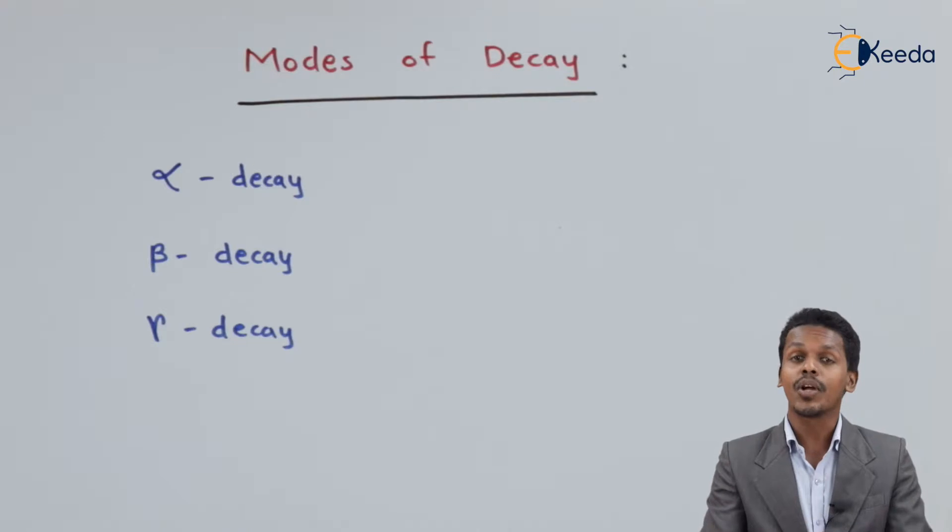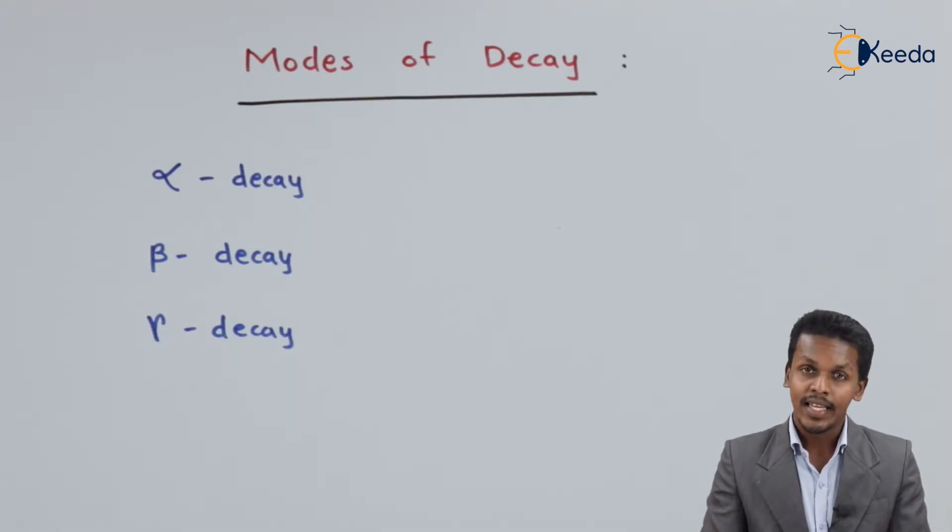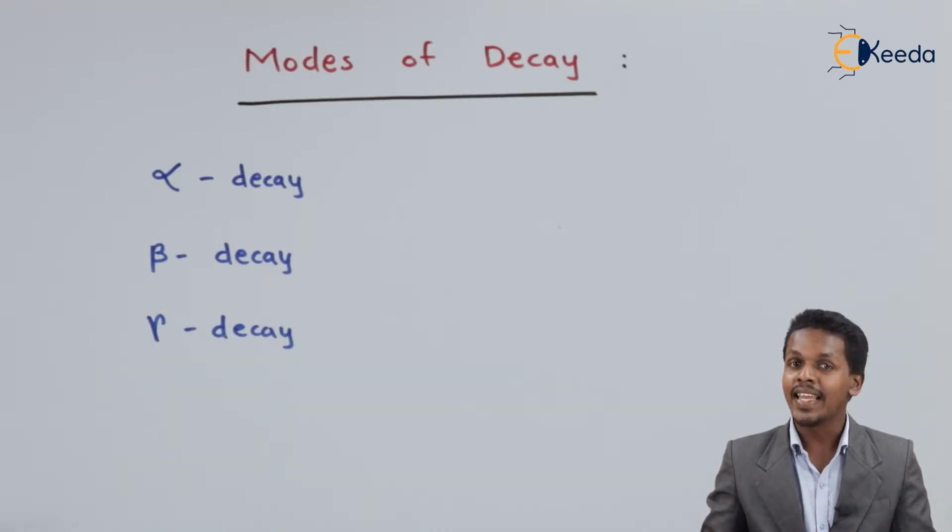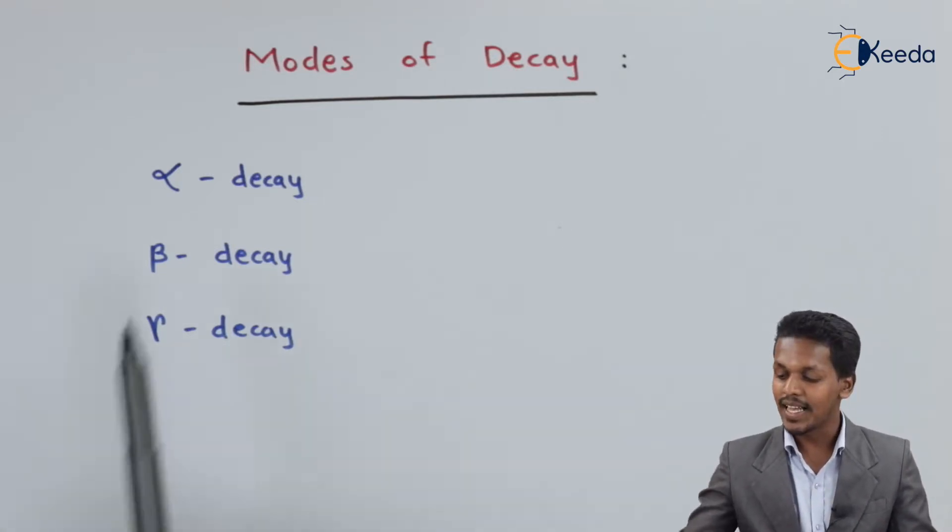So friends, here we are going to talk about the modes of decay. We understand that whenever a radioactive element emits radiation, the radiations are of three types and that is basically known as decay. So that decay is divided into three types: alpha decay,